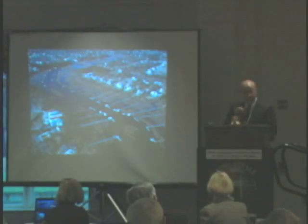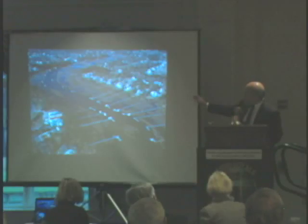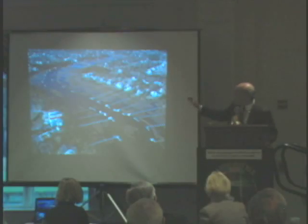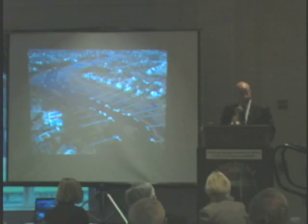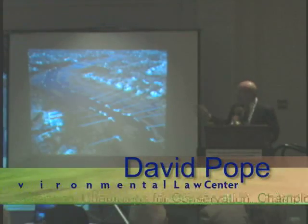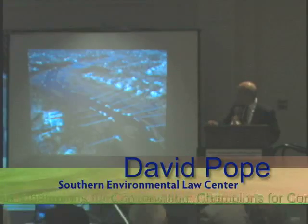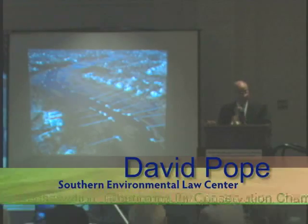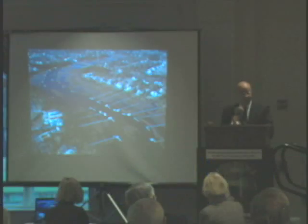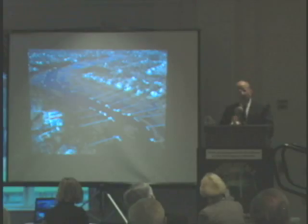In order to build a dock in Georgia — and there may be some exceptions — first the owner of the property has to get a ground lease from the state, because the marsh is the state's property. Then the owner has to get a permit to actually construct the dock in the marsh, although for the most part single-family privately owned docks are exempt from the permitting process — they're in effect automatically permitted.